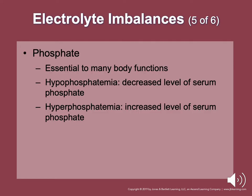Phosphate is the primary intracellular anion and is essential to many body functions. Hypophosphatemia is a decreased level of serum phosphate. It can result from extracellular-to-intracellular shifts of phosphorus and inadequate replenishment. Hyperphosphatemia is an increased level of serum phosphate, caused by a massive shift of phosphate into the extracellular fluid and decreased excretion into the urine.